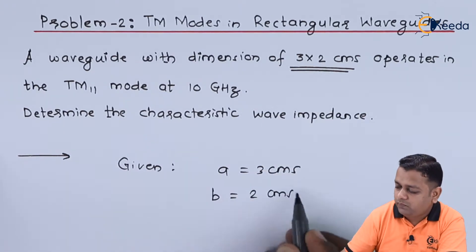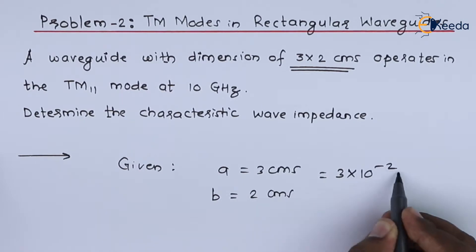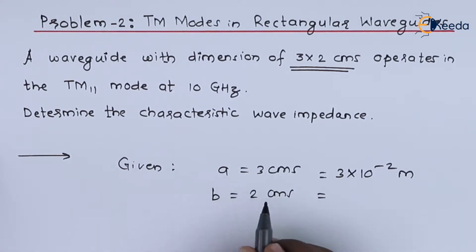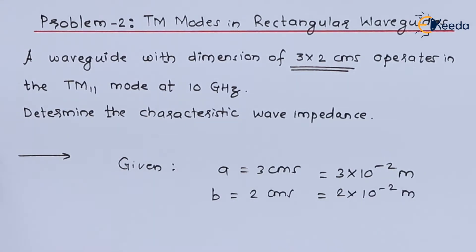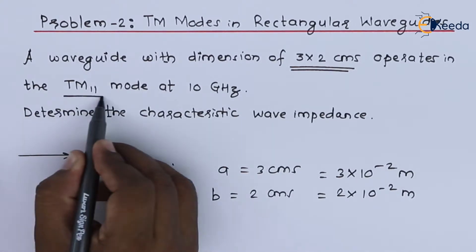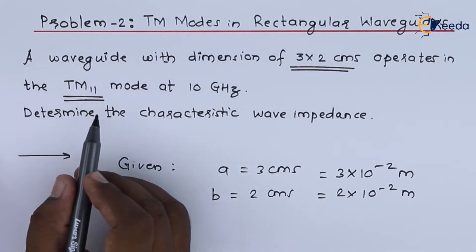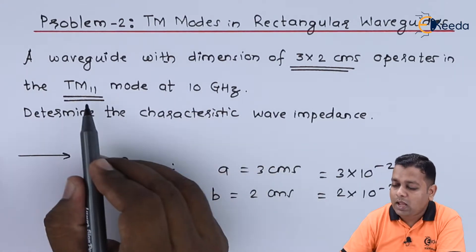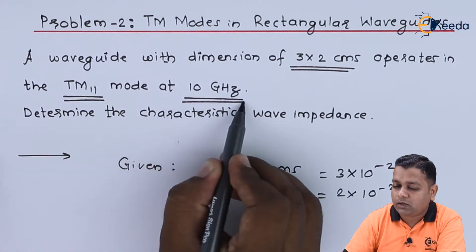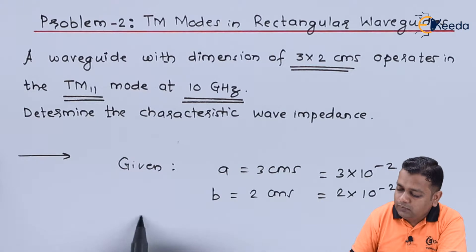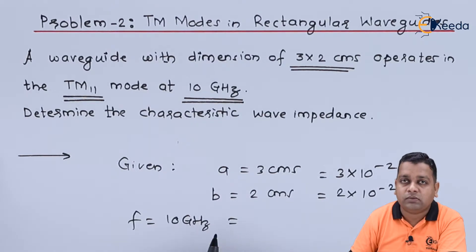In SI units: a = 3 × 10⁻² meters, and b = 2 × 10⁻² meters. The mode of operation is TM11, the same mode used in the previous problem. In addition, we are given the operating frequency f = 10 gigahertz.